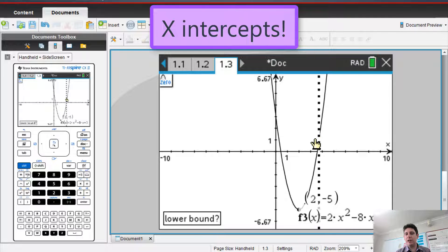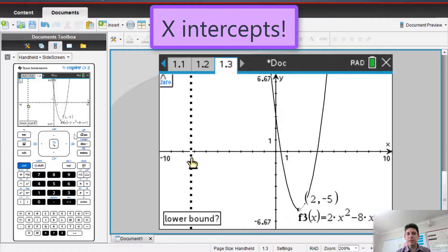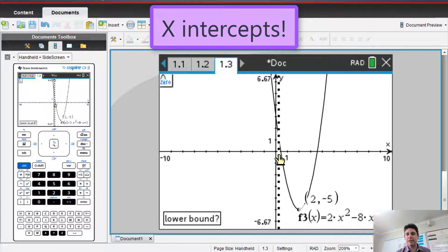You go near the x-intercept. So try and go just left of the x-intercept. Click the middle of the pad. And then go across a little bit. Click the middle of the pad again. And that's your first x-intercept.